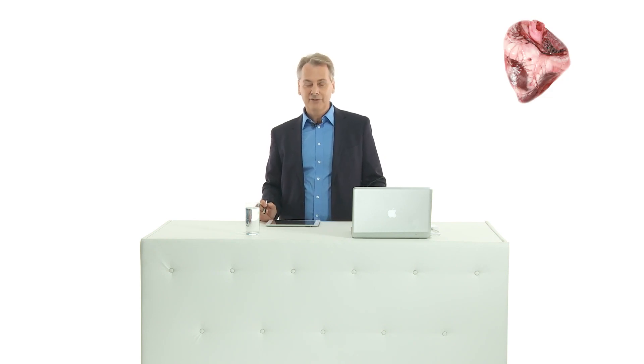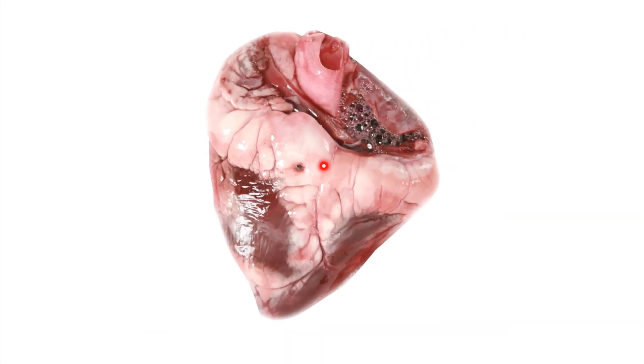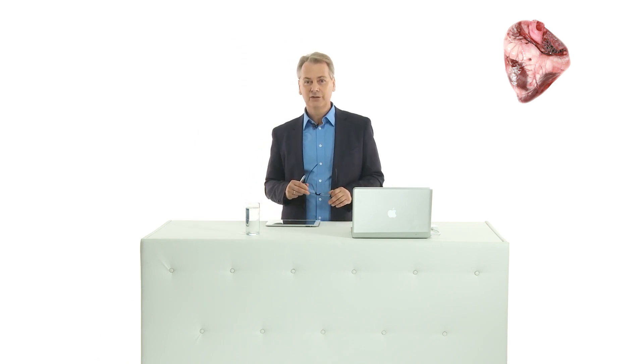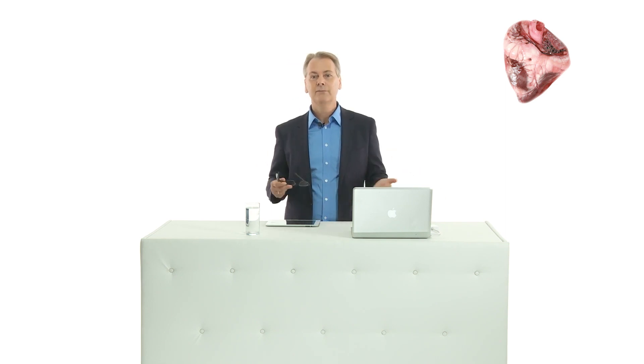The regions where you see epicardial fat very frequently is right here in the groove between the atria and the ventricle, and very frequently you would see it here at the bottom of the heart, and sometimes also close to the left atrial appendage. One feature of epicardial fat is that you don't see very much of it in the region of the atria, so if you have a structure there, very likely it is not epicardial fat but something else.